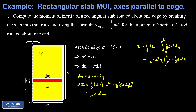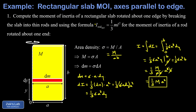We don't want the answer in terms of area density, so we replace sigma with M divided by the total area a·b. This gives one-third times (M/ab) times a³ times b. The b's cancel and one factor of a cancels, leaving the moment of inertia of a rectangular slab about one edge as one-third Ma². This is exactly the same formula as a rod rotated about one end — not a coincidence, since a slab rotated about one edge has the same percentage of mass at the same distances from the rotation axis as a one-dimensional rod.